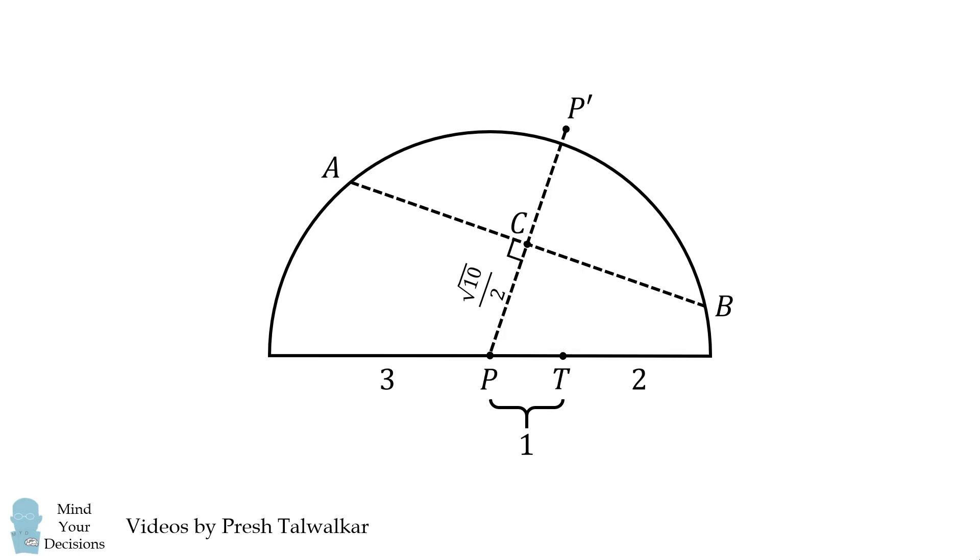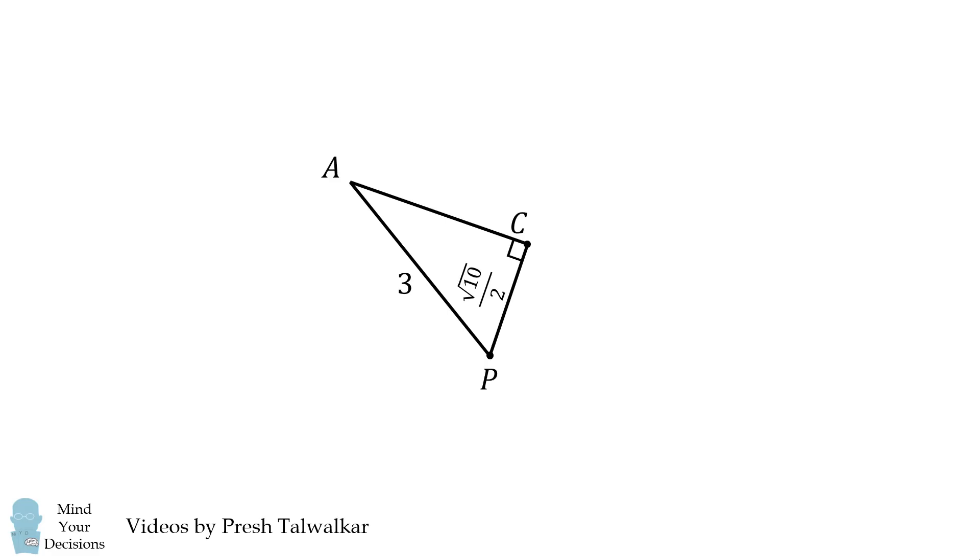Now, let's construct the radius PA. Since it's a radius of this semicircle, it will have a length of 3. We will then focus on the right triangle PAC. We can calculate the length of AC using the Pythagorean theorem. We get the result of the square root of 26 all over 2.